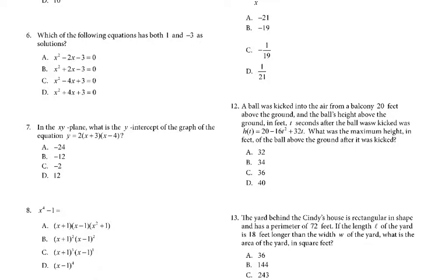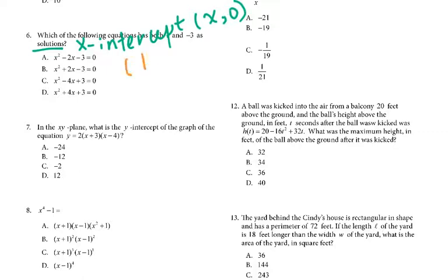For number 6, which of the following equations has both 1 and negative 3 as solutions? Solutions means x-intercepts, which means the y-coordinate must be zero. Just plug in the coordinates (1, 0) and (negative 3, 0) to check which equation holds. The answer is B.